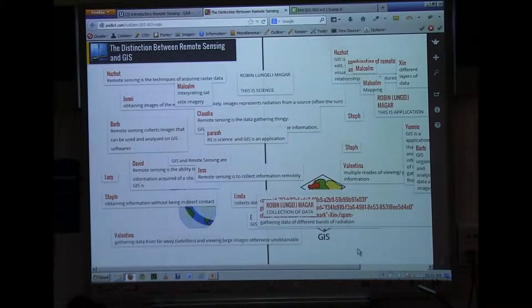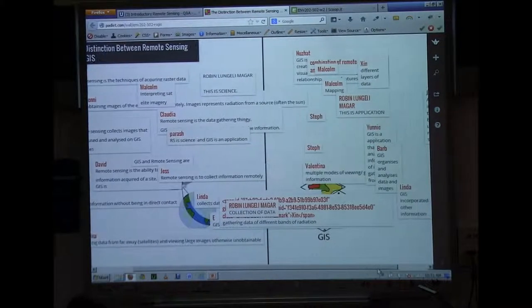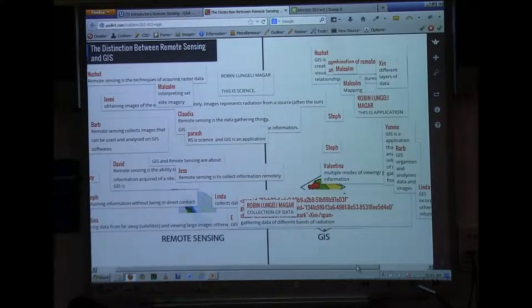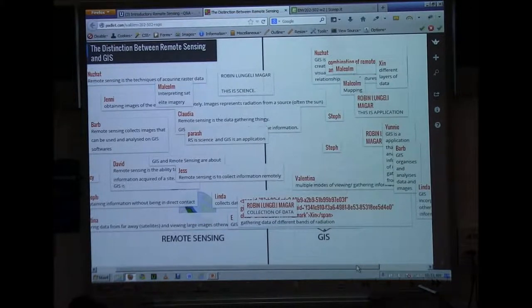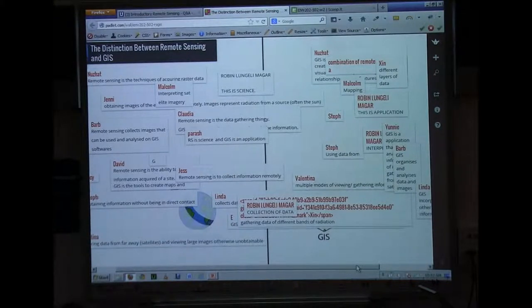If we look at it in more detail and the actual definition of GIS, it's really all about people, software, hardware, data, and methodologies coming together to provide a complete package, which is really where that system concept comes from.